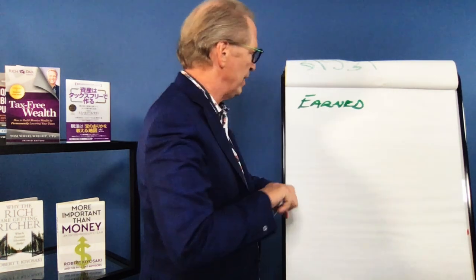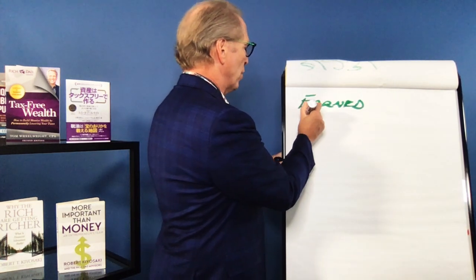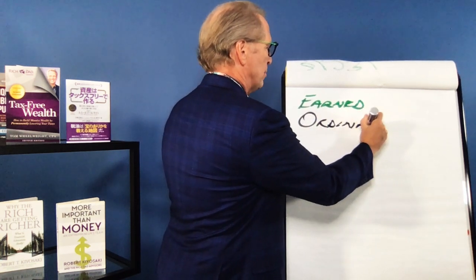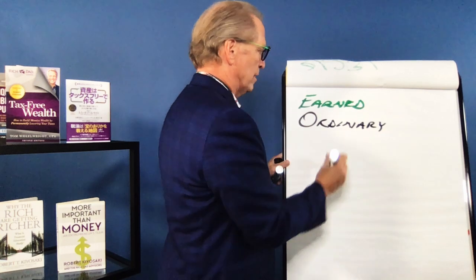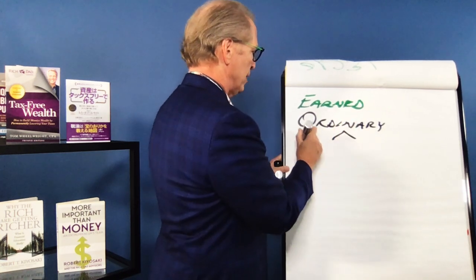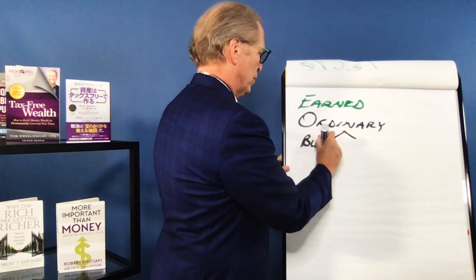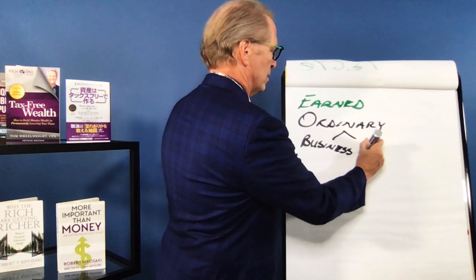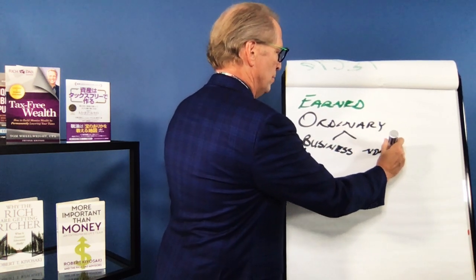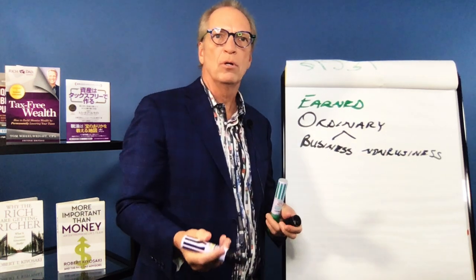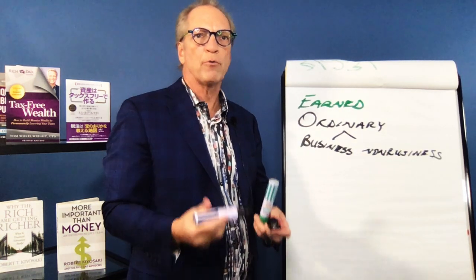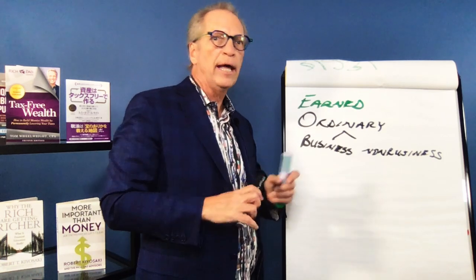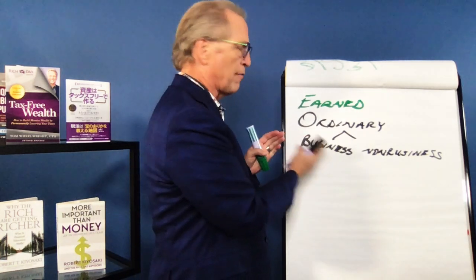The next type is ordinary income, which actually has to be broken down into two types: one is business income, which is ordinary income, and one is non-business income — for example, a pension plan, profit-sharing plan, or 401(k) retirement income. That's ordinary income, taxed at ordinary income rates, and it's never business income.